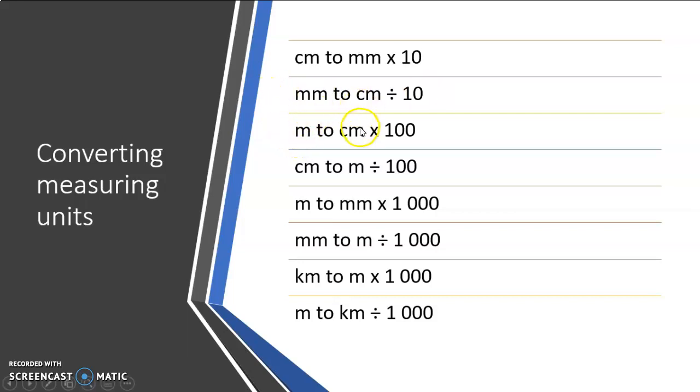If I go from centimeter to meter, there's a hundred centimeters in a meter and therefore I multiply with 100. If I go from centimeter to meter, opposite operation, divide by 100.